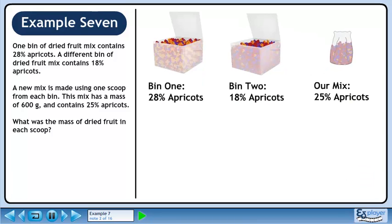Bin 1 contains 28% apricots and bin 2 contains 18% apricots. If you look closely at the illustrations, you can see that the concentration of orange apricots in bin 1 is slightly greater than the concentration in bin 2. We make a new mix by taking a scoop from bin 1 and a scoop from bin 2. We don't know what the mass of each scoop is, but we do know that our final mix has 25% apricots.